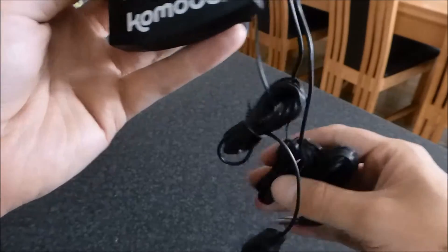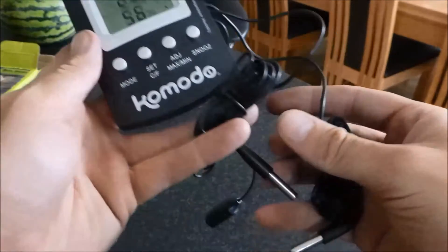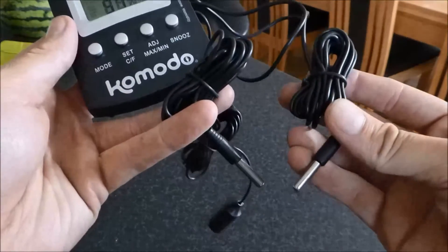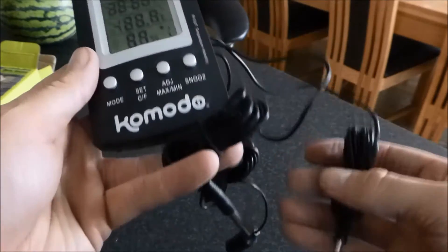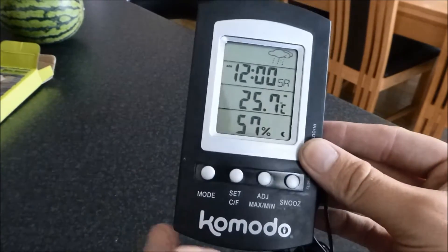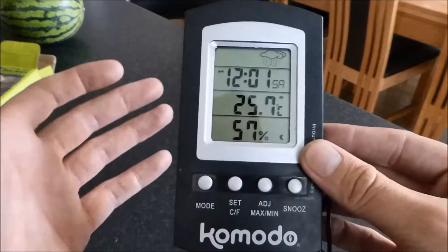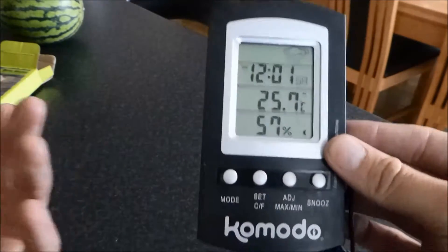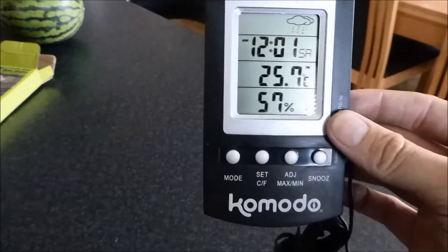These are very accurate. I've actually tested it in our lab. We have got HANA instrument thermometers. When the HANA instrument said 22.3 degrees, this actually said 22.9, so it's not even half a degree out.